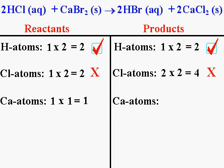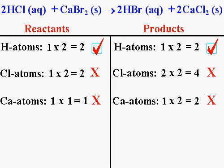On the product side, Ca is in the molecule CaCl2. There's only one Ca in the molecule because there's no subscript after the Ca. However, that two next to the molecule tells us there are two CaCl2 molecules. I take the number of Ca atoms in the molecule, one, and multiply by the number of molecules, two — giving two Ca atoms on the product side. Once again, the Ca doesn't balance: there's one on the reactant side and two on the product side.